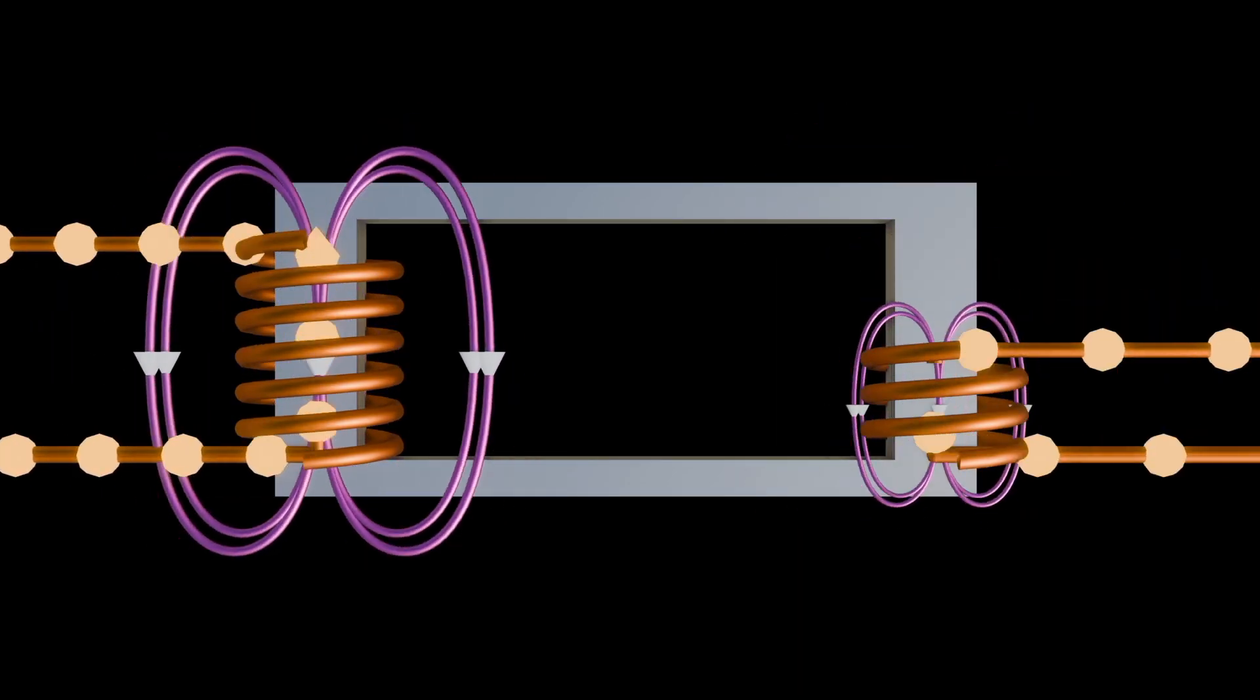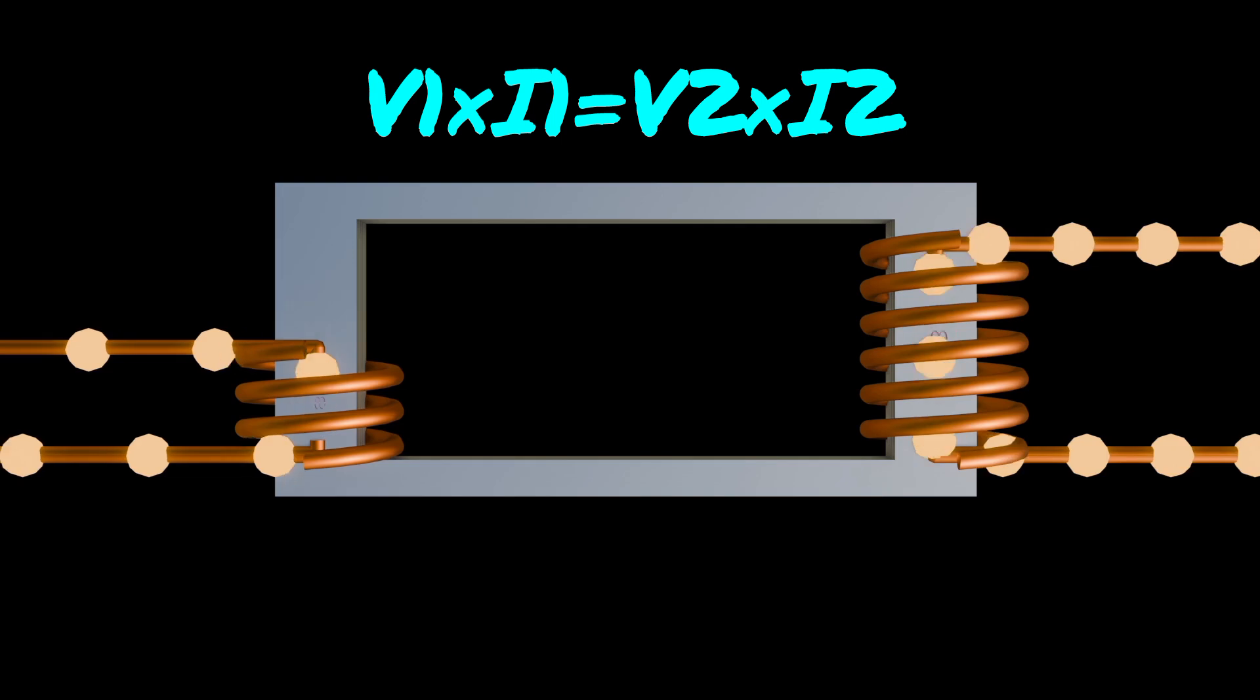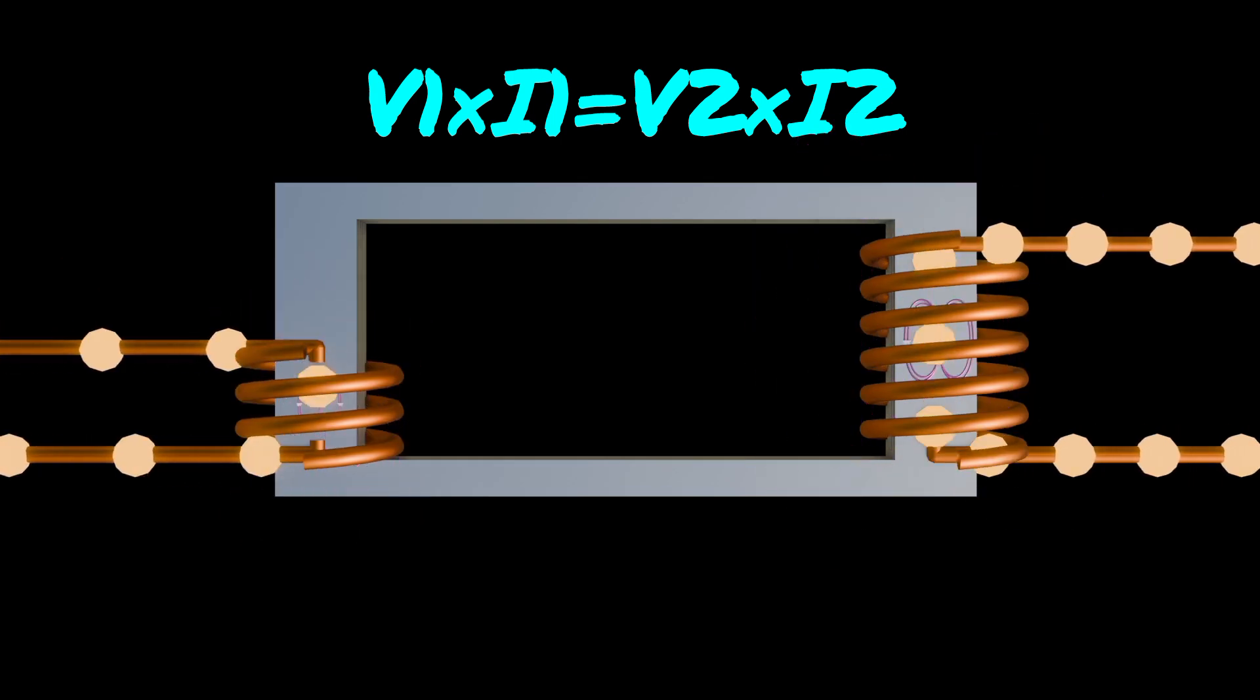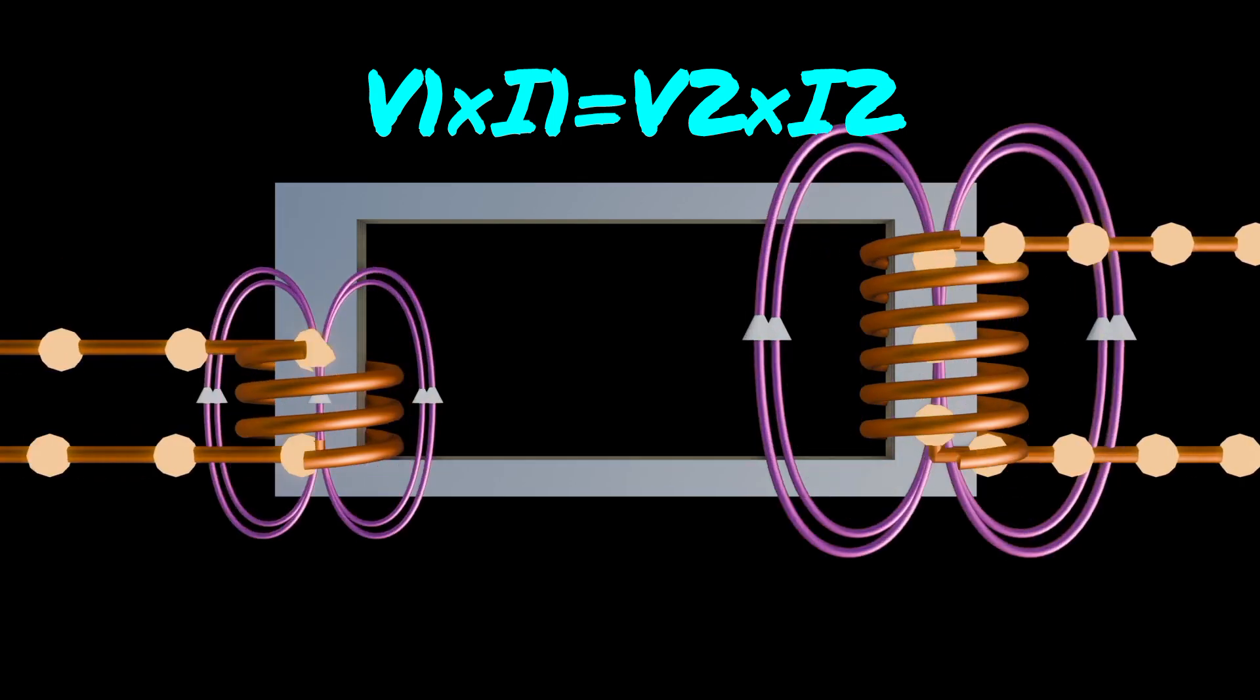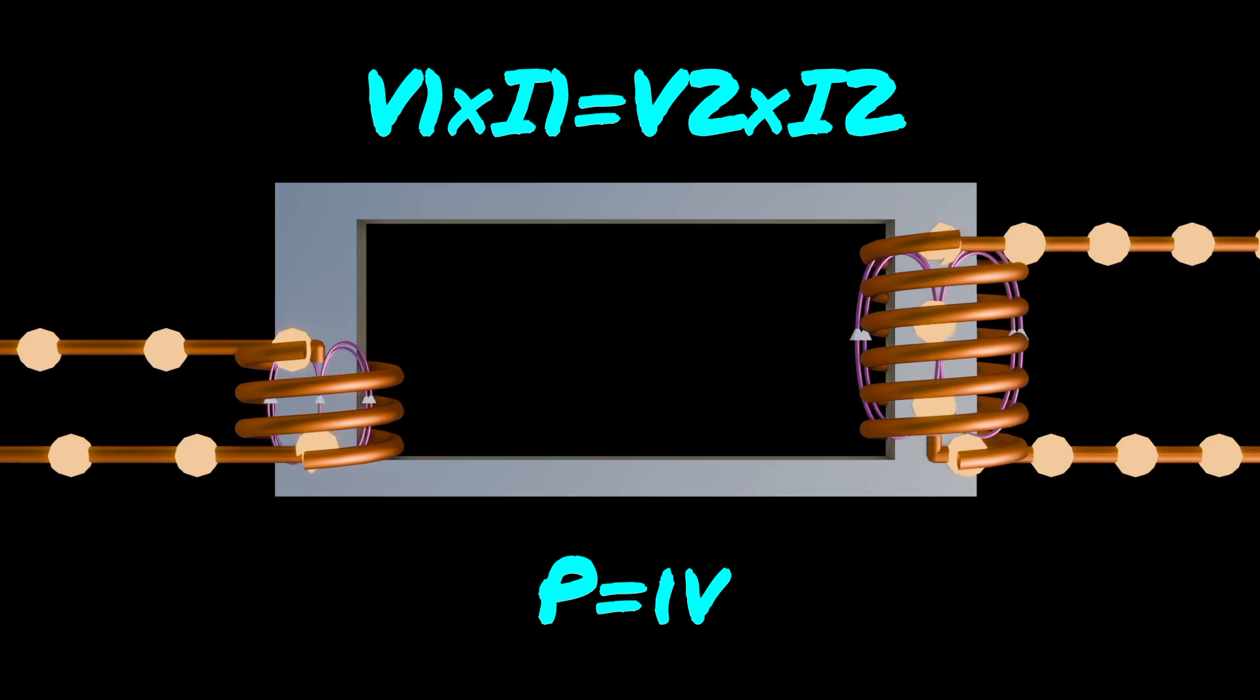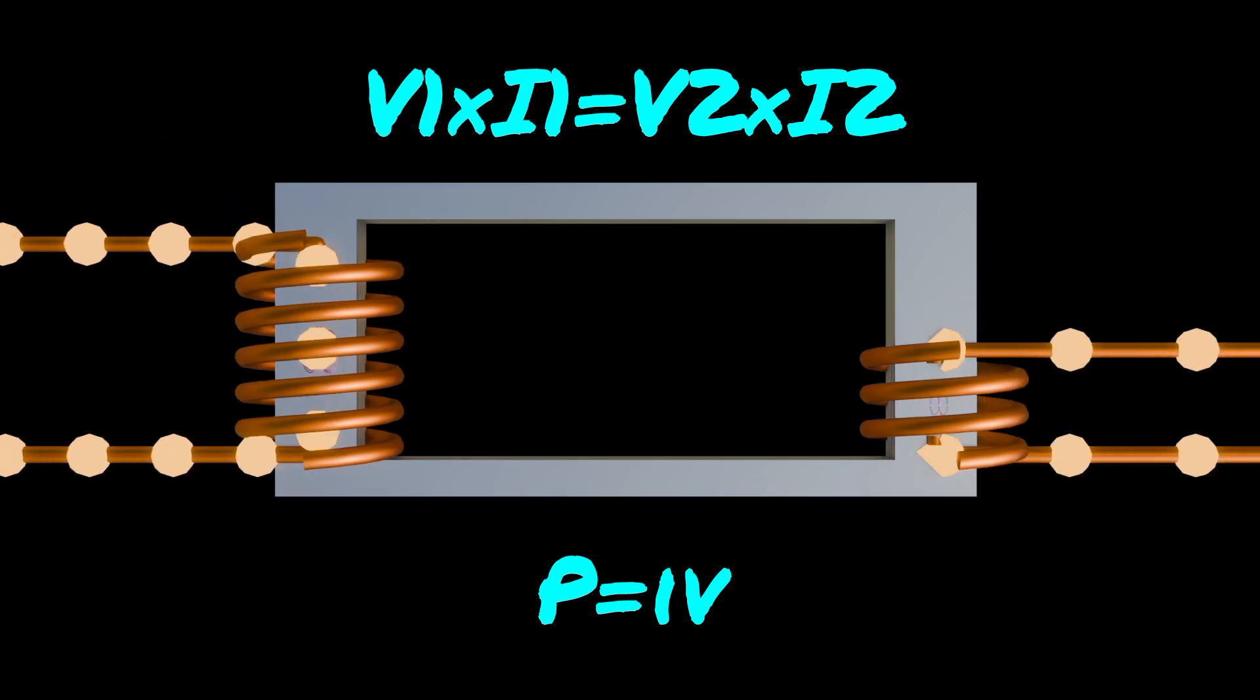The main formula governing the operation of a transformer is V1 times I1 equals V2 times I2, where V1 is the voltage in the primary coil and I1 is the current flowing through the primary coils. This formula represents the conservation of power in a transformer, stating that the power input to the primary coil V1 times I1 equals the power output from the secondary coil V2 times I2.